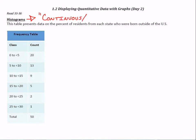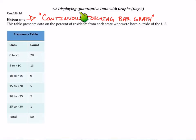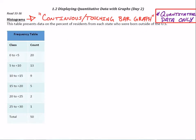If you're not familiar with histograms, you can think of them as being continuous, or just a touching bar graph. Histograms are for quantitative data — think of them as a bar graph squeezed together with a number line underneath it. Definitely quantitative data only.